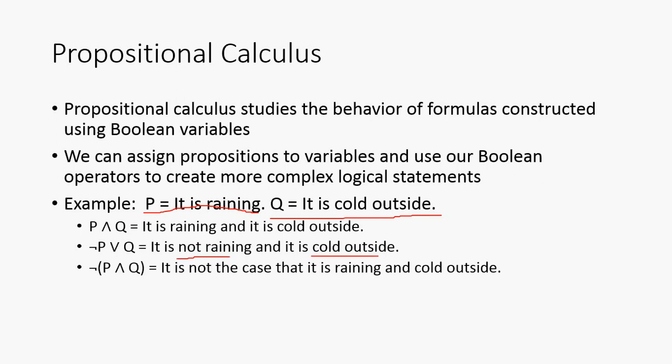Or, sorry. This should be an or. Let's fix that. Or. And, for the final bullet point, we have the negation of P and Q. So, it is not the case that it is raining and it is cold outside. And, if you remember from DeMorgan's Law, this guy right here would be equivalent to not P or not Q.